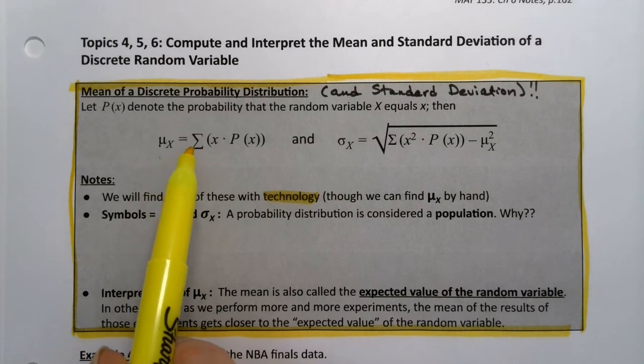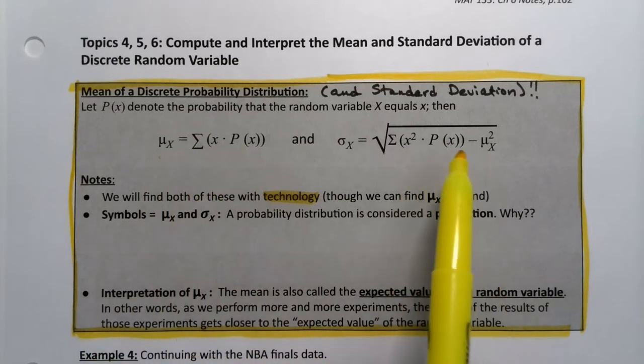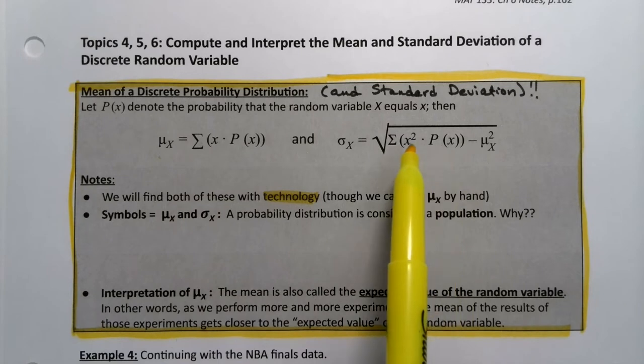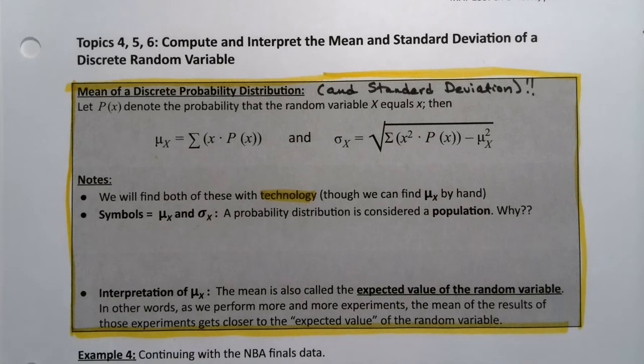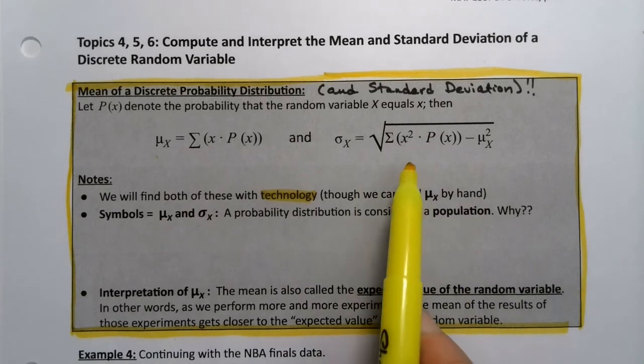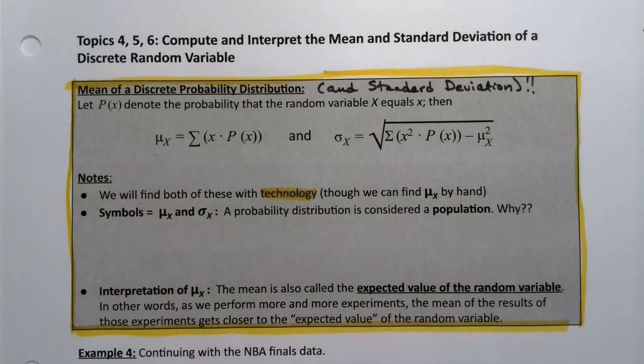You take each value, multiply by its probability, and then add them up, and that will get you the mean of the discrete probability distribution. The standard deviation is a little more complicated: you take the values squared, multiply by the probabilities, add them up, and subtract the mean squared. But again, we will definitely use technology for the sigma.